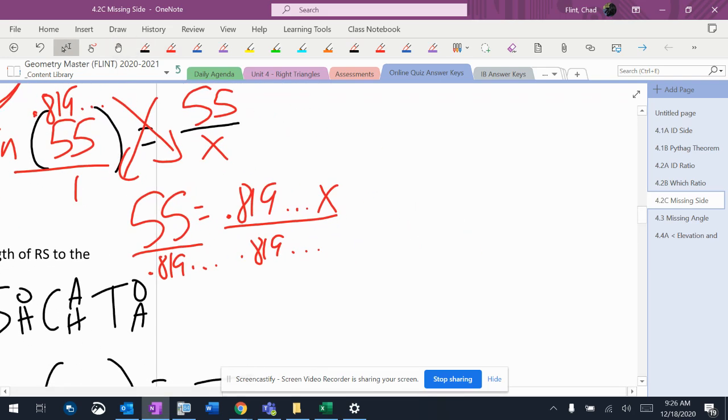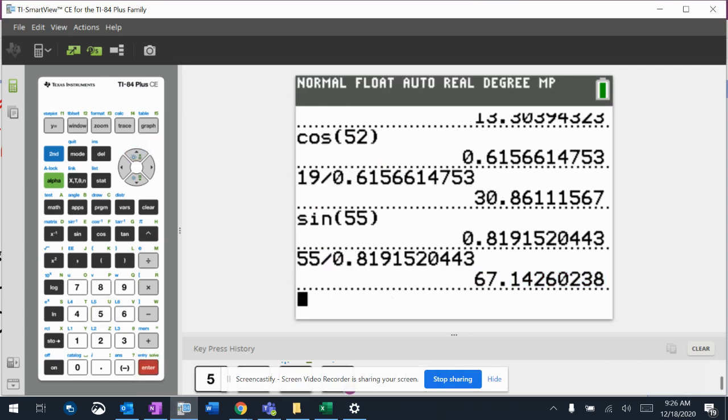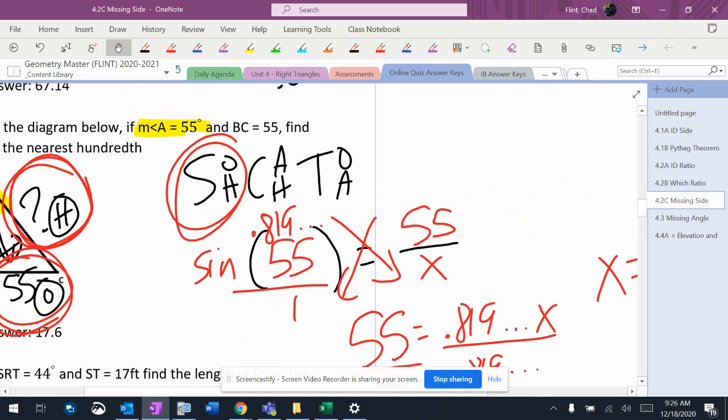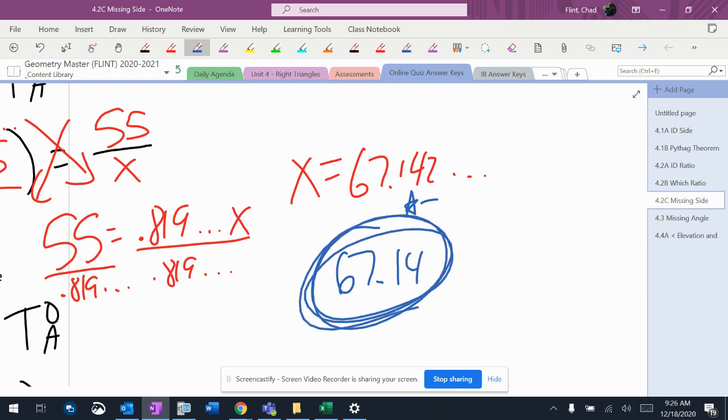And now, x equals 67.142. Nearest hundredth, so I'm rounding the 4 using the 2. So, 67.14.